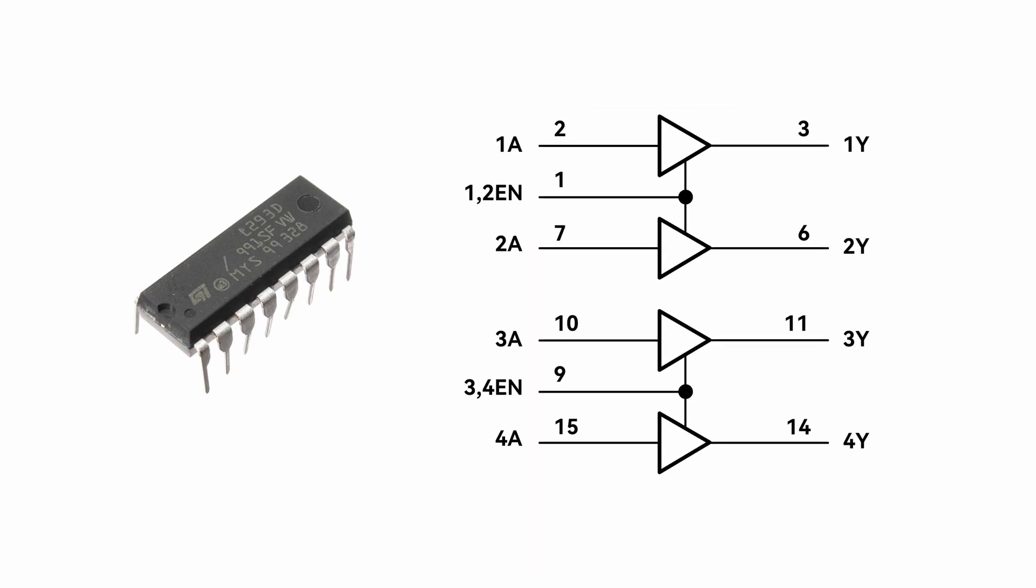A logic diagram is a graphical representation used to describe how various components in an electronic circuit or system are interconnected and function. It illustrates the signal flow paths within the circuit and the relationships and operational logic between different components such as transistors, logic gates, and integrated circuits. Now, let's use a logic diagram to introduce the working principle of the L293D.